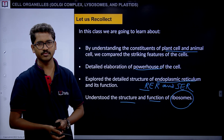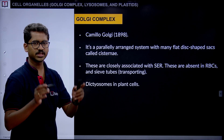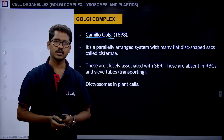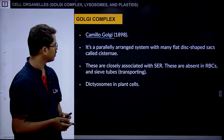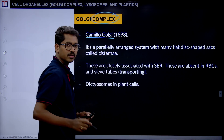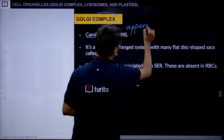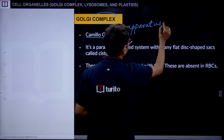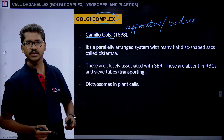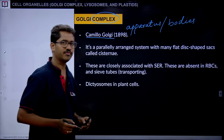Now we move forward to today's session. The first organelle for discussion is the Golgi complex. It was first observed by Camillo Golgi in 1898, and he named it after himself. In some publications, you may read it as Golgi apparatus, and in others as Golgi bodies — they all refer to the same structure: the Golgi complex, Golgi apparatus, and Golgi bodies are all the same thing.